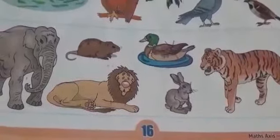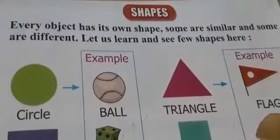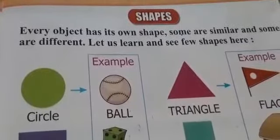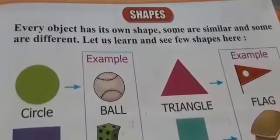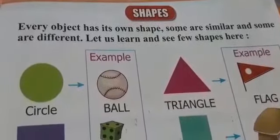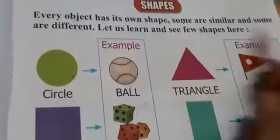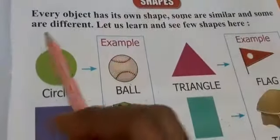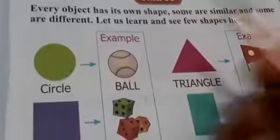अब हम लोग आते हैं page number 17 में. This is your page number 17. देखें, इसमें आप लोग को shapes पढ़ना है — S-H-A-P-E-S, shapes. Every object has its own shape. Some are similar and some are different. Let us learn and see a few shapes here. यहाँ बहुत सारे shapes दिए गए हैं — कुछ समान हैं, कुछ अलग हैं — और यहाँ हम लोग कुछ shapes के नाम पढ़ेंगे.